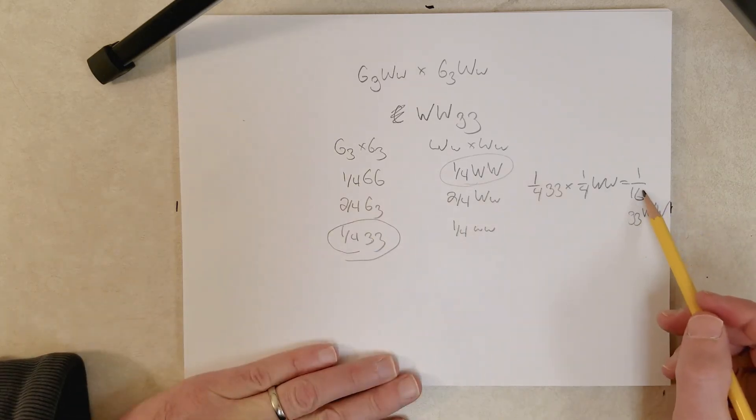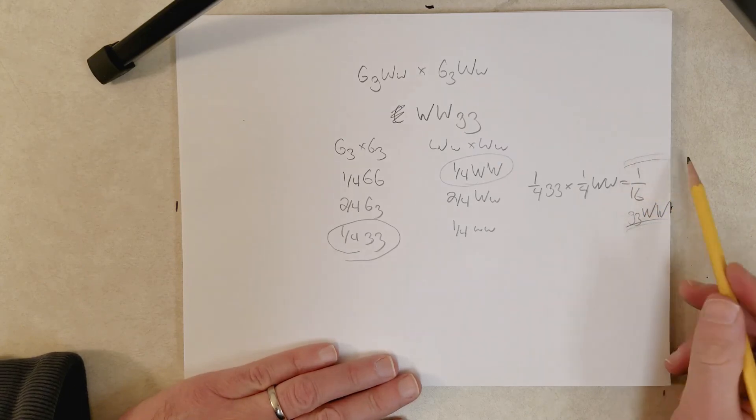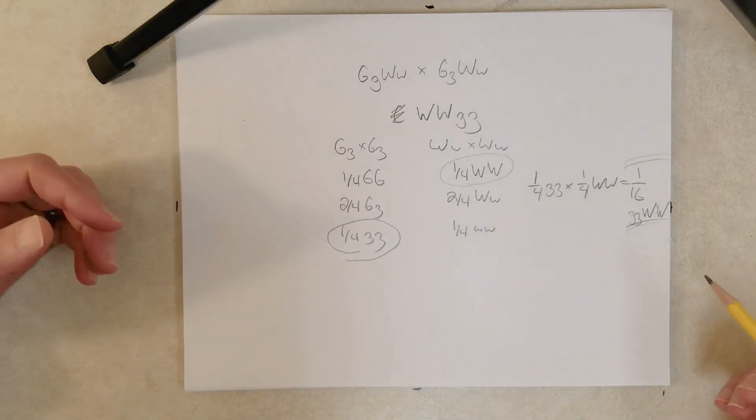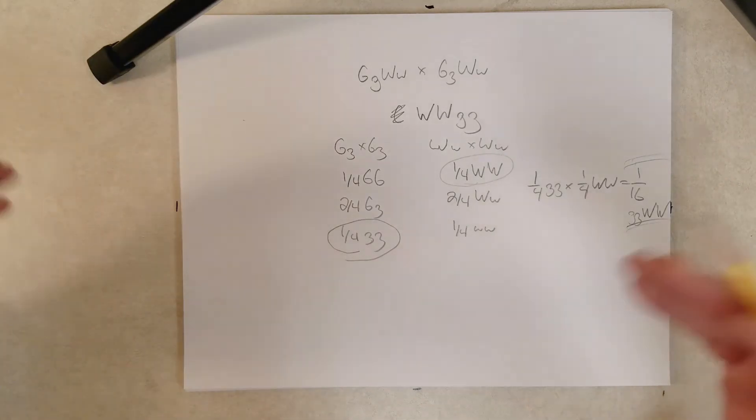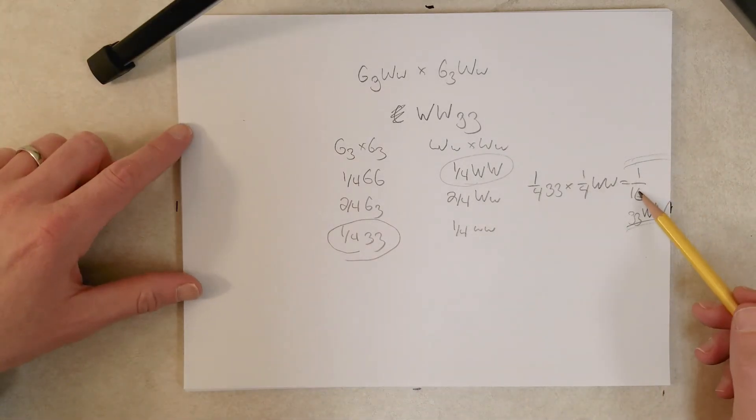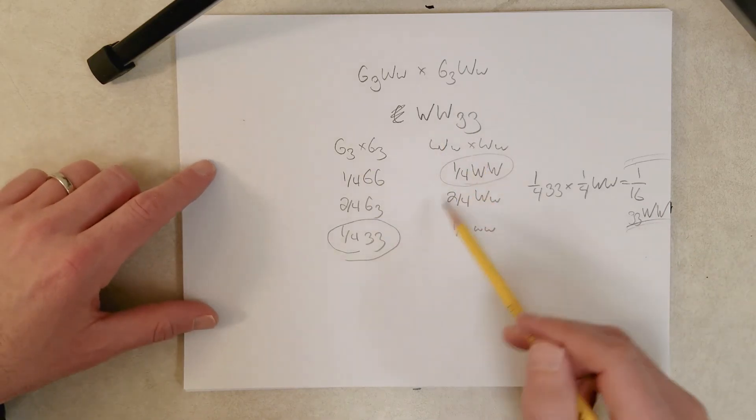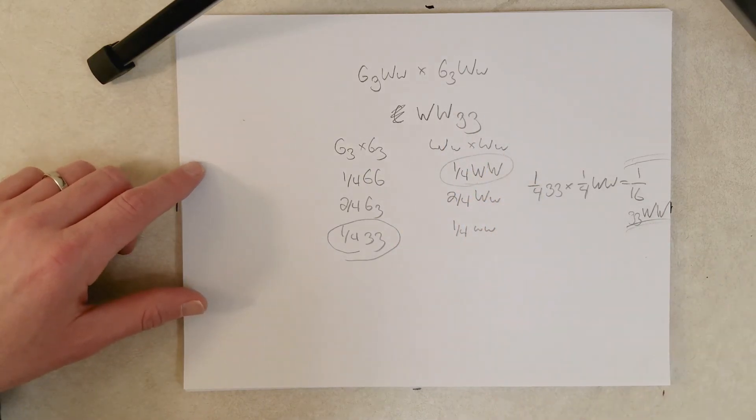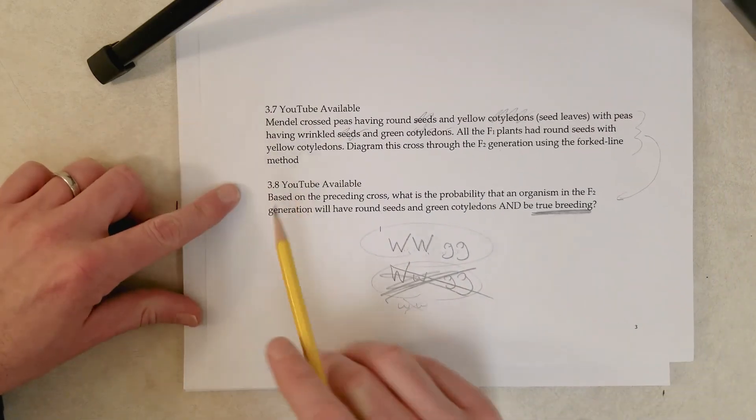So, this is the fraction of the progeny that have this genotype. It's also the probability, we're predicting if there's thousands of offspring produced, one sixteenth of them will have this genotype.